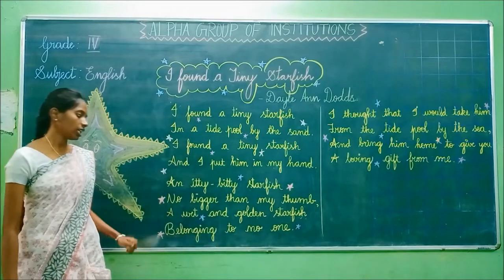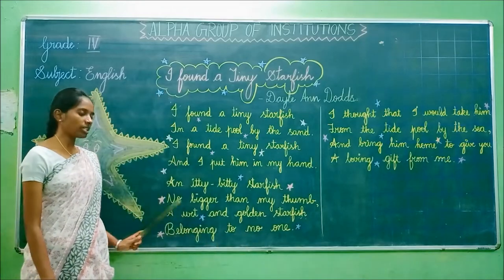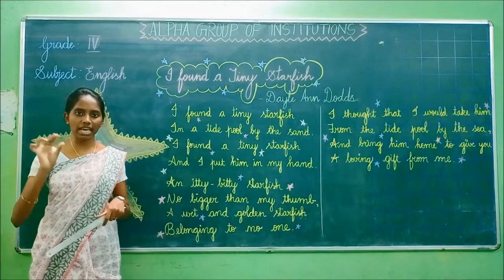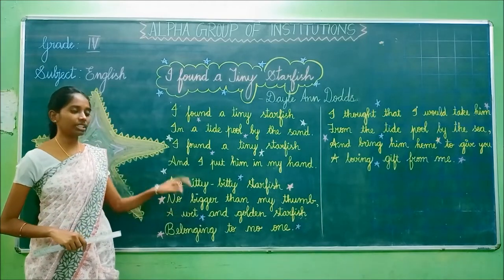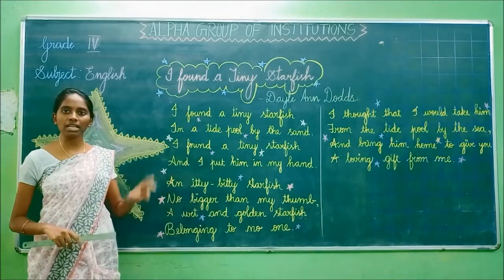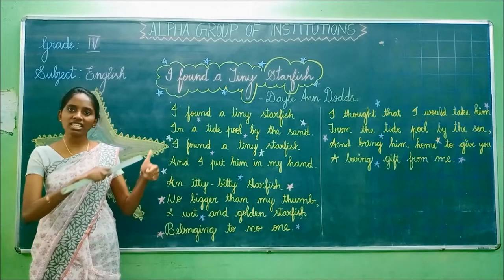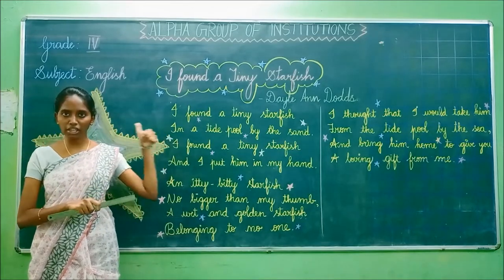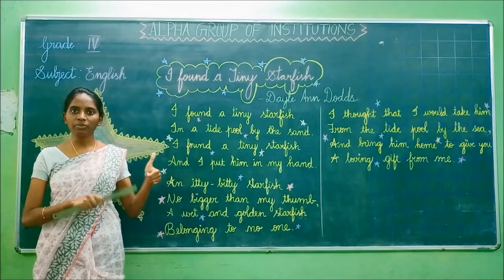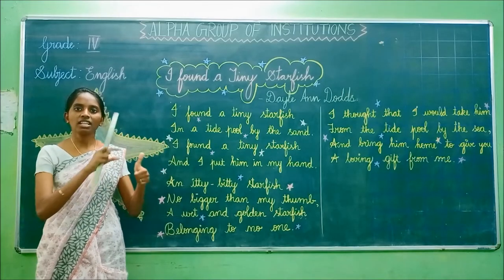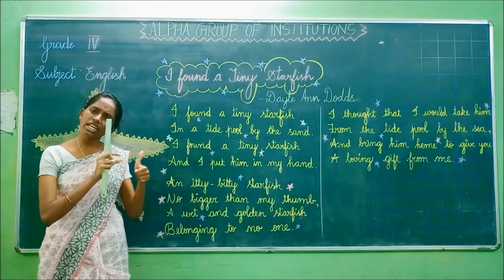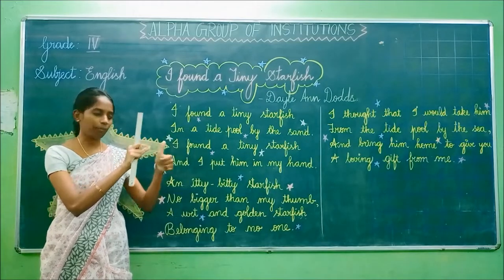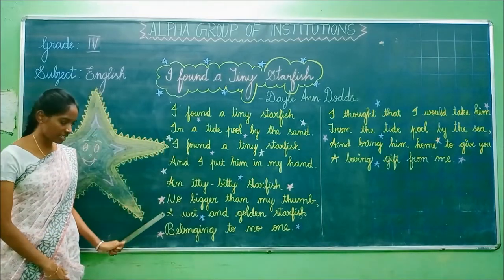The poet says the starfish is very small — a tiny one. And here he compares the starfish with his thumb. Thumb is a finger. The poet says the starfish is very small when we compare it with our thumb.